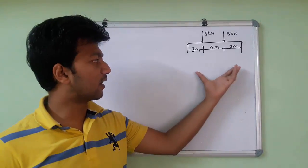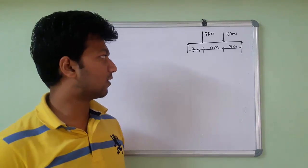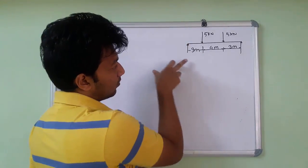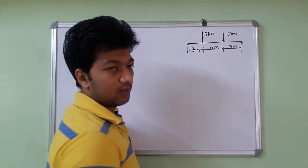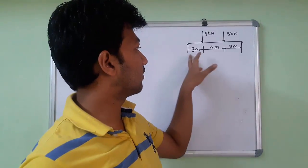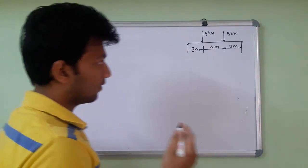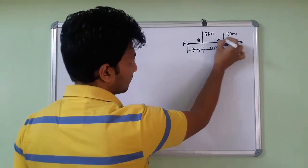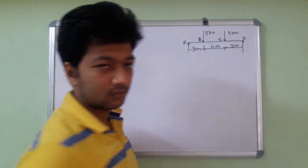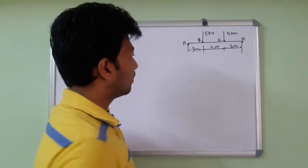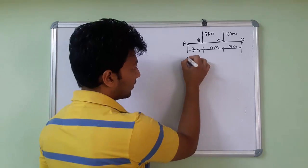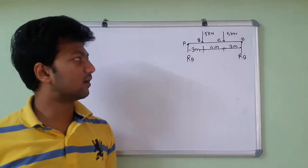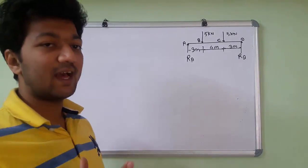This is the diagram. We have to find the bending moment and the shear force. We have 5 kN in the downward direction and 5 kN in the downward direction at a distance of 3. We give the naming: A, B, C, and D. First thing, we have to find the reaction at the supports. The reaction forces are RA and RB.